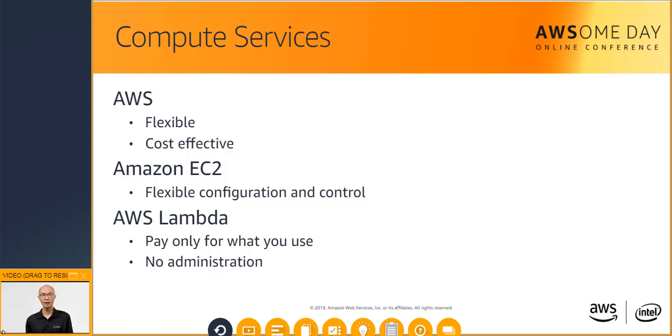Amazon EC2 allows you complete flexibility to run applications at any scale. You maintain complete control over your environment, and unlike an on-premises environment, with on-demand pricing you can cost-effectively scale resources up and down to meet your needs. What if, instead of running servers, you could just run your application when needed?